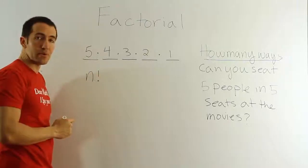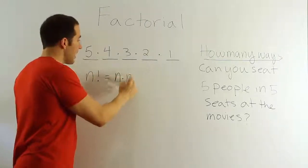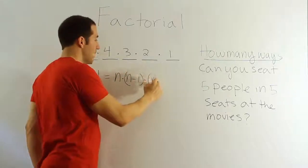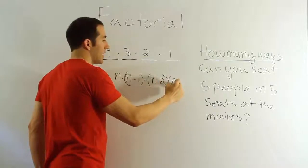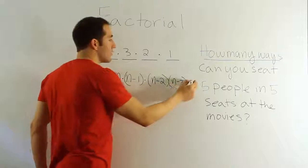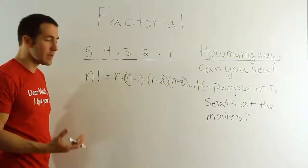Factorial is a little exclamation point. But what n factorial means is it basically means n times n minus one times n minus two times n minus three dot dot dot. On and on and on, all the way until you get down to one. That's the end of the string. So that's n factorial. That's what n factorial is.